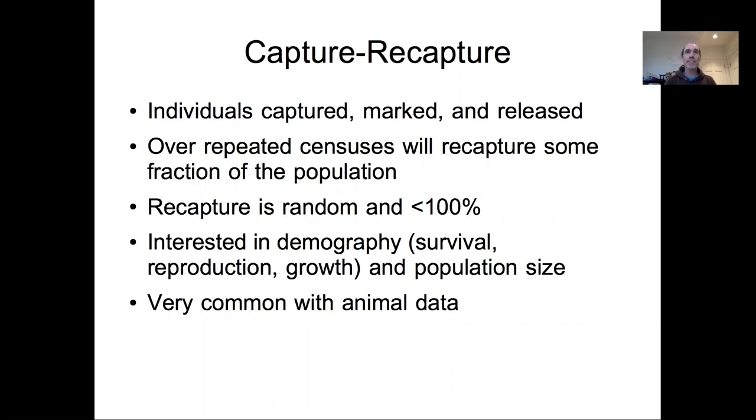To illustrate the flexibility of this framework and its ability to deal with very different types of error, I'm going to focus on an important class of problems for modeling populations, which are capture-recapture data. If you're not familiar with capture-recapture data, this is usually used with animal populations. The idea is that individuals are captured through some sort of trapping mechanism, they are marked, and then they are released. As you continue to capture, you will eventually recapture some individuals. Now, it's important to note that we're assuming that we recapture individuals randomly and that we don't capture them perfectly. So the recapture rate is less than 100%.